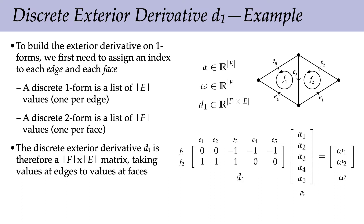When you just start manipulating matrices, you can lose track of what you're doing. The reminder is: we had this idea of taking derivatives of differential forms to do things like the gradient and curl. Now we have a way of doing that on integrated pieces. If we've already integrated little pieces of the thing we want to differentiate, we hit that with a matrix and get integrated pieces of the differentiated quantity — exactly.